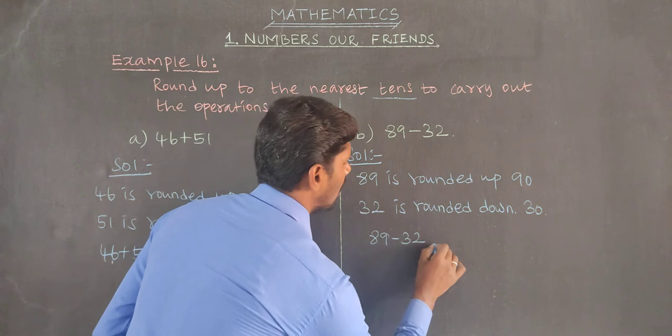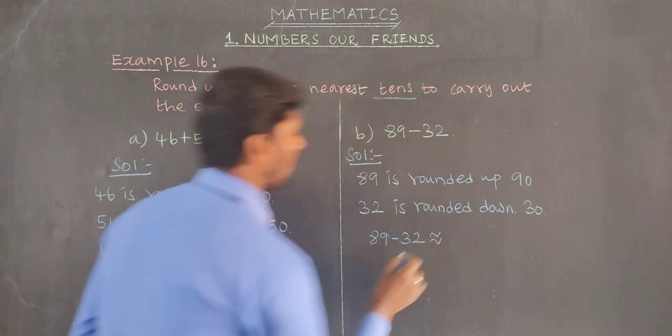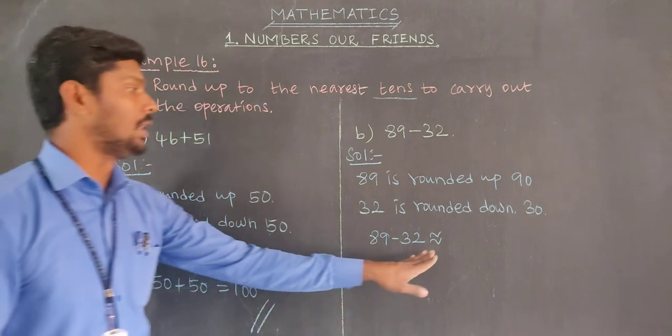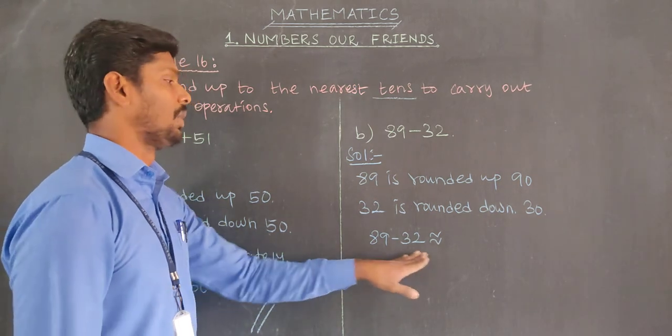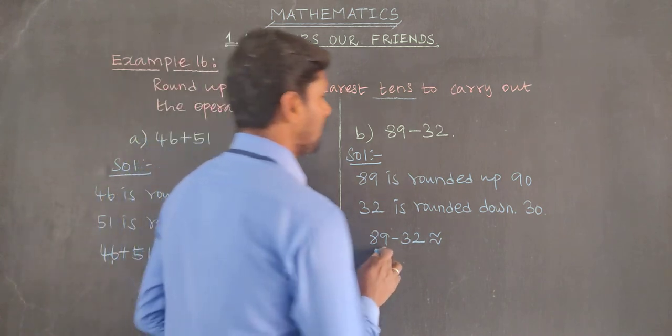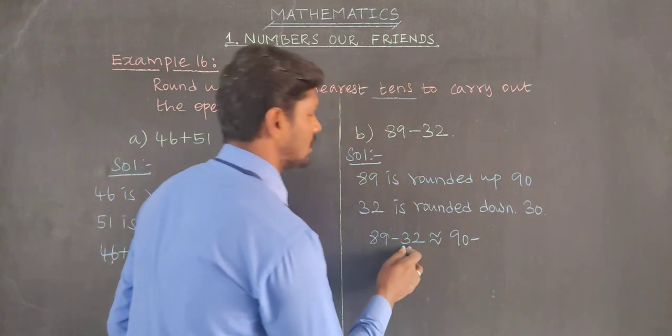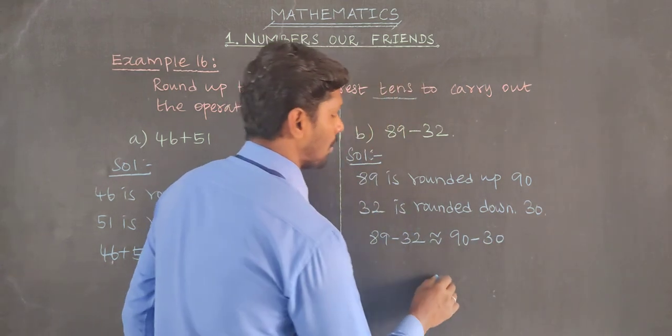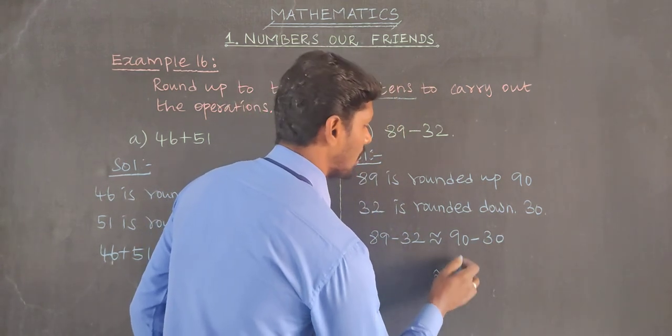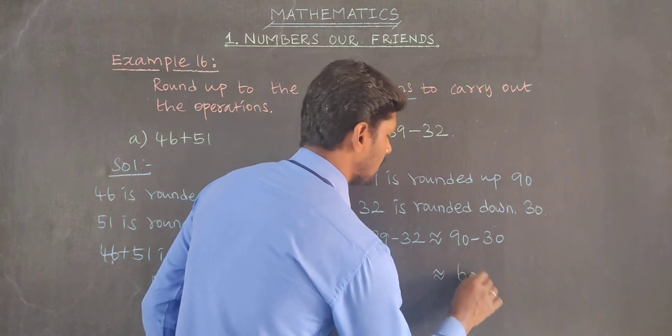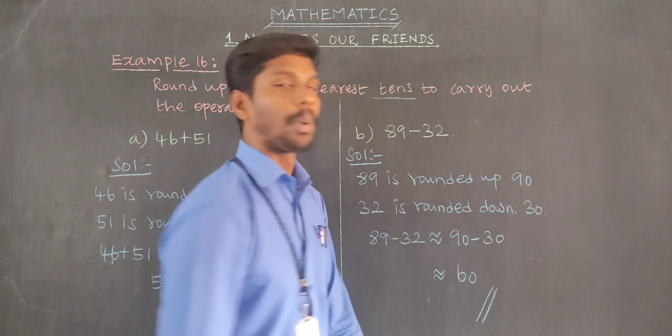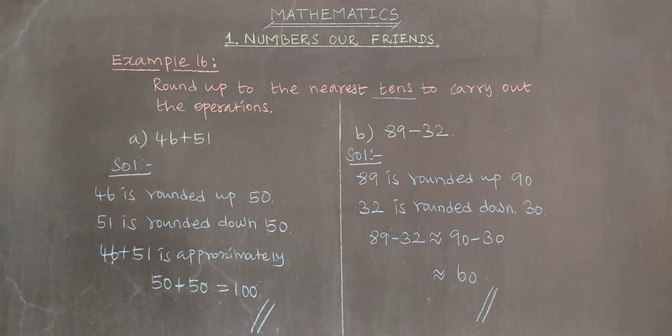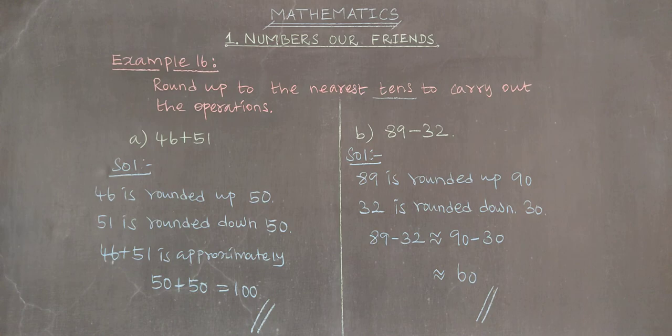32 is rounded down to 30. So 90 minus 30 equals 60. 60 is the approximate value.